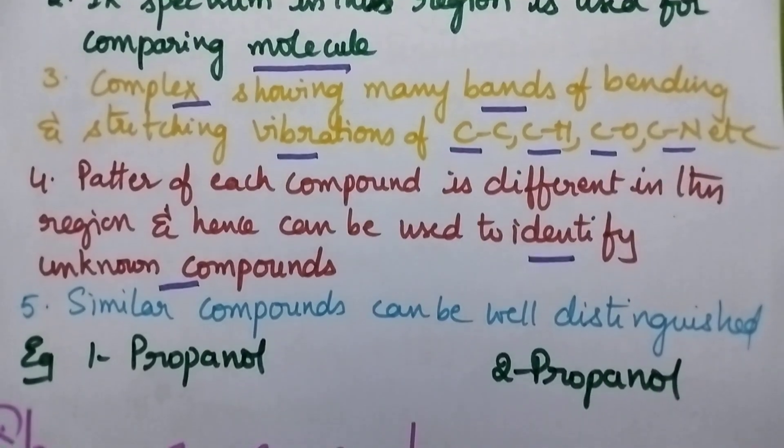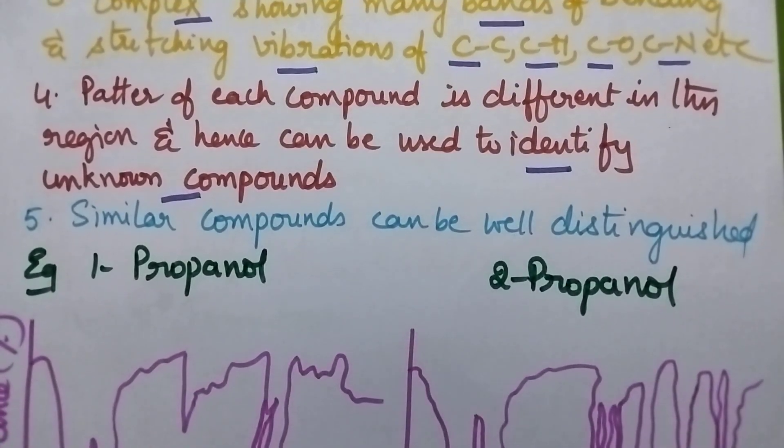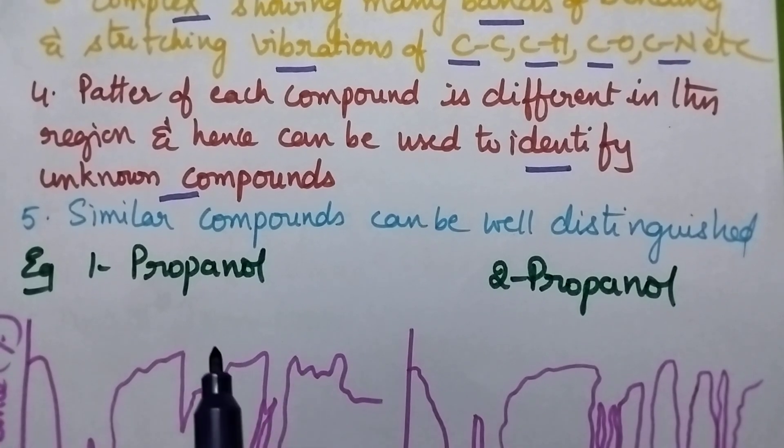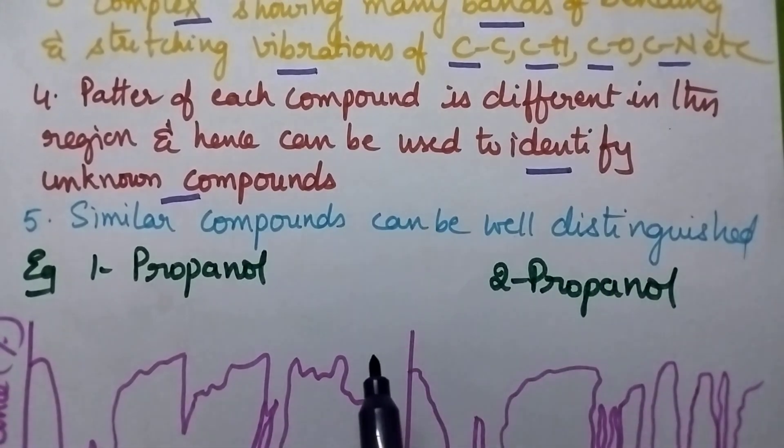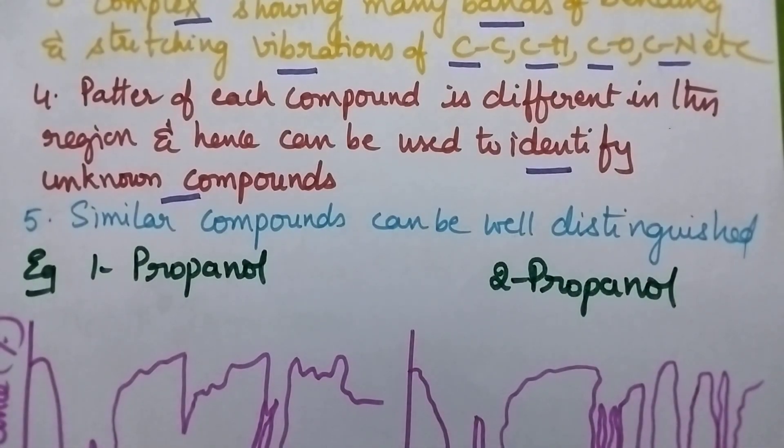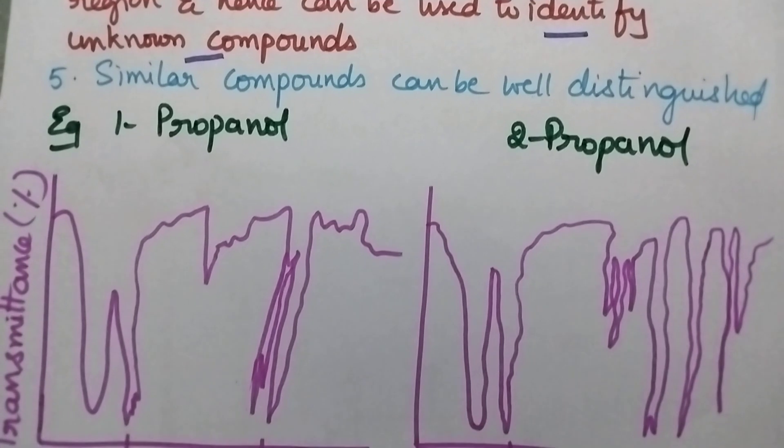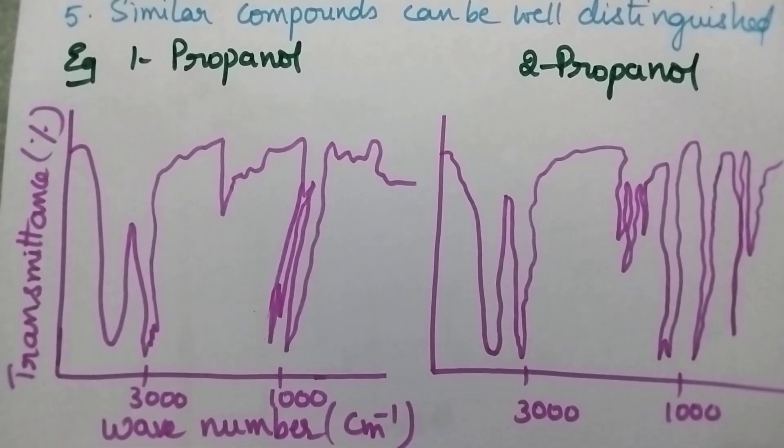The major importance of the fingerprint region is that similar compounds can be well distinguished by getting the spectrum in this fingerprint region. Let us consider the best example: 1-propanol and 2-propanol.